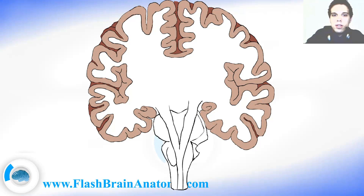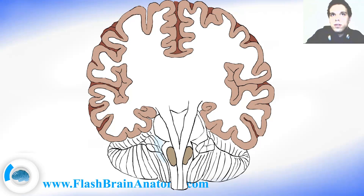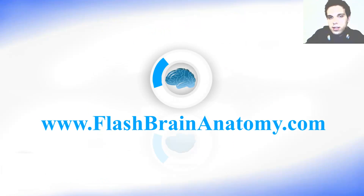The internal capsule is part of the white matter. It contains the ascending and descending axons. And these are the mamillary bodies — the nuclei. And then I illustrated the cerebellum.